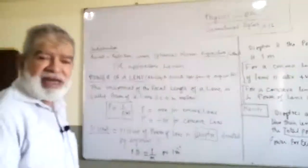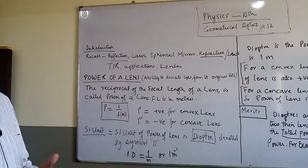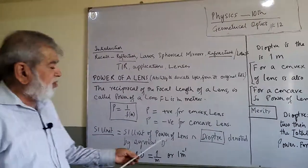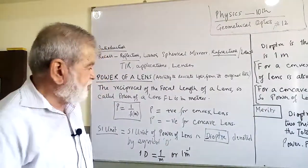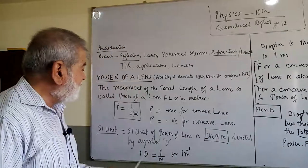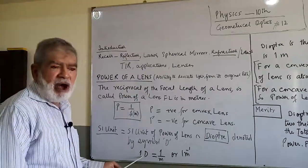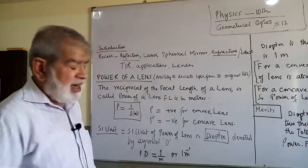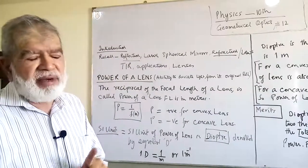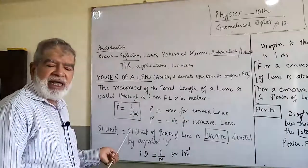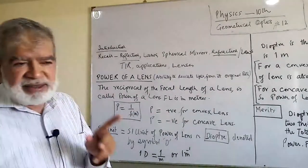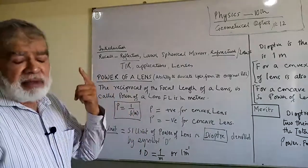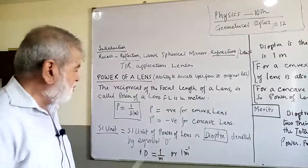What is the SI unit, the international unit of power of a lens? The SI unit of power of a lens is diopter. We denote it with capital D. What is one diopter equal to? It is one over focal length in meters, or one per meter. If the focal length is one meter, the power of the lens is one diopter.